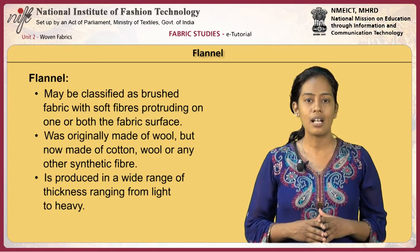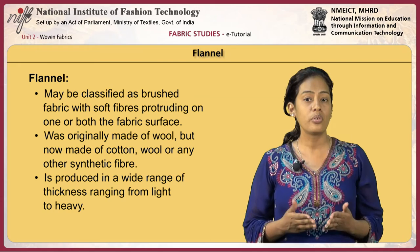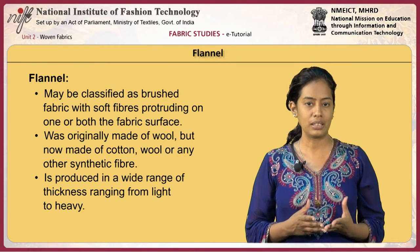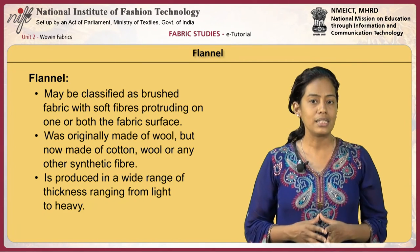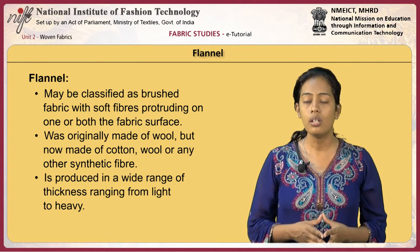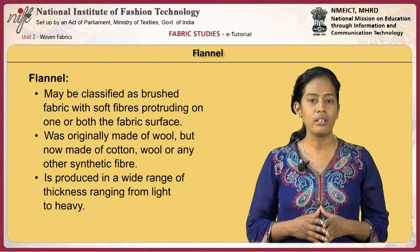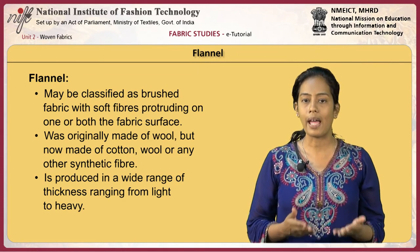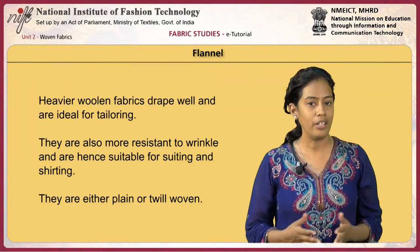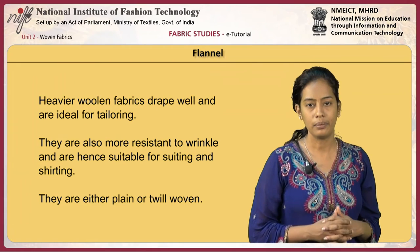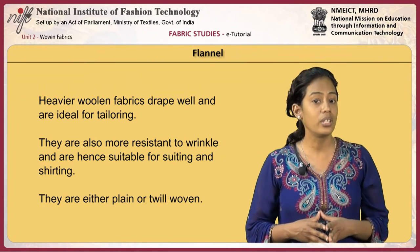Flannel may be classified as a brushed fabric with soft fibres protruding on one or both fabric surfaces. Originally flannel was made of wool; now it is made of cotton, wool or any other synthetic fibre. It is produced in a wide range of thickness from light to heavy. Heavier woolen flannel drapes well and is ideal for tailoring. It is also more resistant to wrinkles, hence suitable for suiting and shirting.